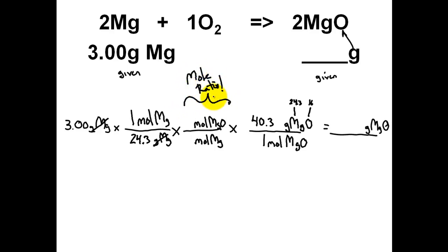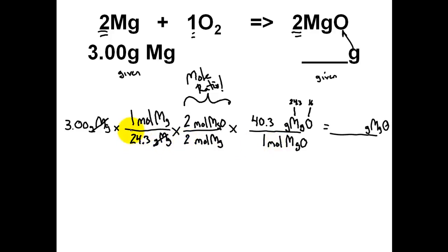The mole ratio is nothing big — it comes from the coefficients used to balance the chemical reaction. For MgO, the coefficient is 2: two moles of MgO per two moles of Mg. The problem is now set up. I do 3 × 1 × 2 × 40.3 divided by 24.3 divided by 2 divided by 1. The answer is rounded to three significant figures. Pause it and try to calculate this — we get 4.98 grams of MgO produced.